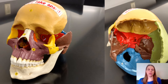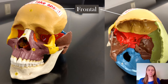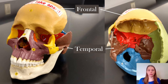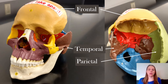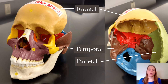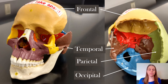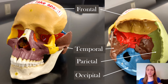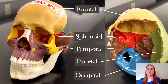In the front of your head you have the frontal bone, on the side is the temporal bone, the top sides are the parietal bones, in the back is the occipital bone, and then this red bone in the center which is connected to and touching all of your other bones is the sphenoid bone.